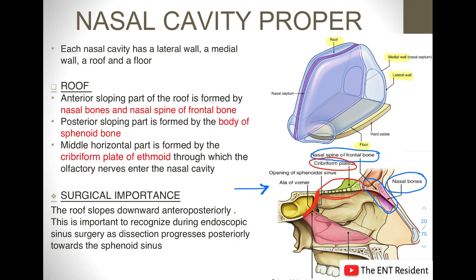The importance of knowing the roof's orientation: when introducing an endoscope into the nose, we must remember that the roof slopes downward anteriorly. This is important during endoscopic sinus surgery as we progress towards the sphenoid sinus posteriorly. If we didn't know about this angulation, we could go straight ahead and destroy the cribriform plate. Knowing this anterior-to-posterior angulation helps us avoid injuring the cribriform plate, the olfactory nerves passing through it, or the sphenoid sinus.